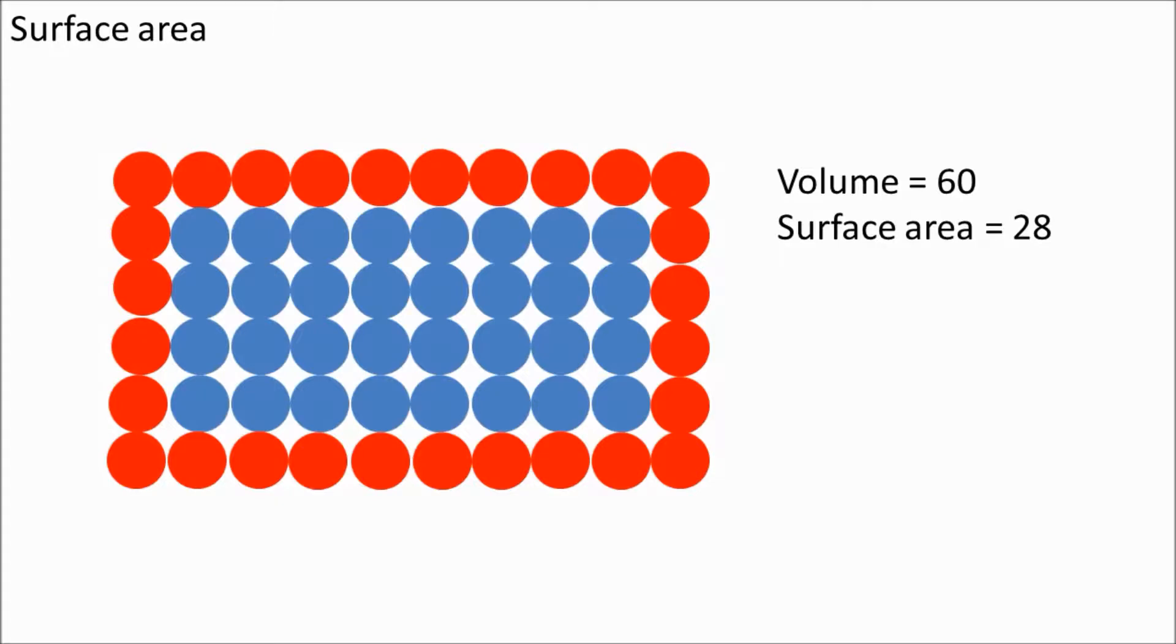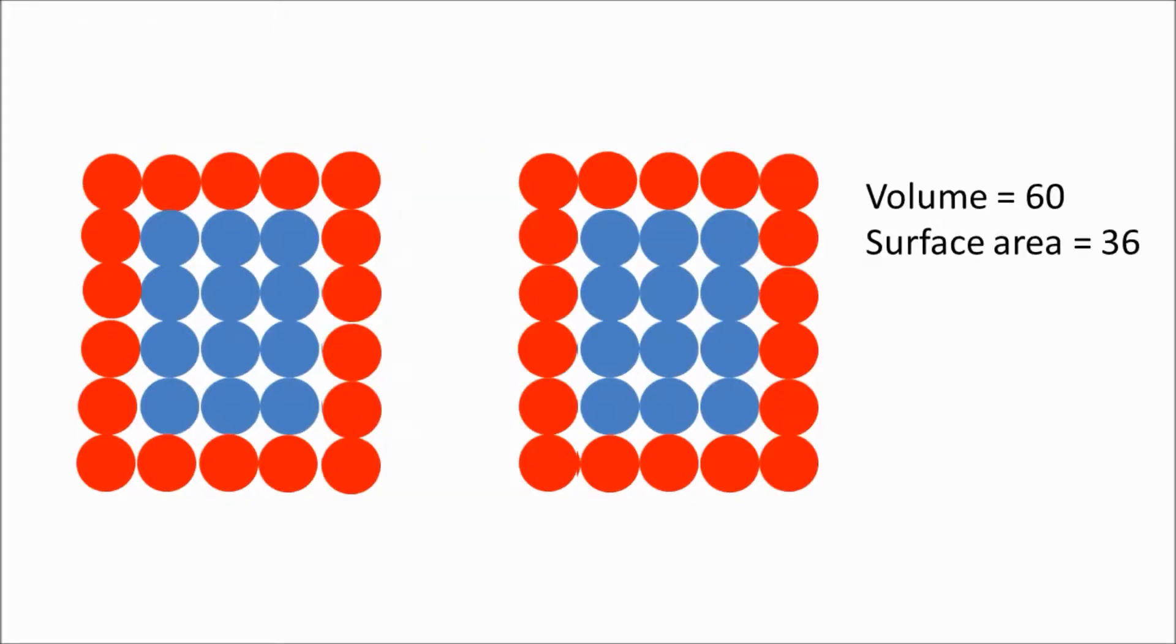If we chop this solid into smaller pieces, we still have the same volume. There are still 60 atoms, but we have a larger surface that are exposed. We now have 36 particles available for collision.